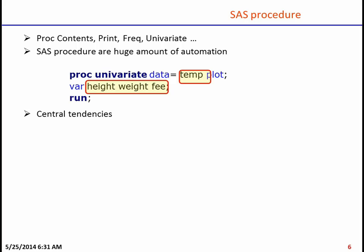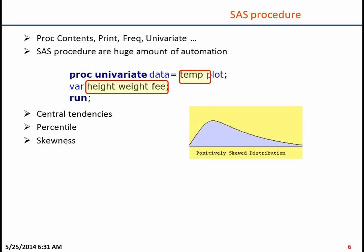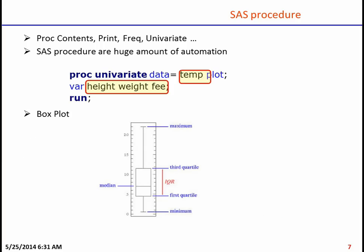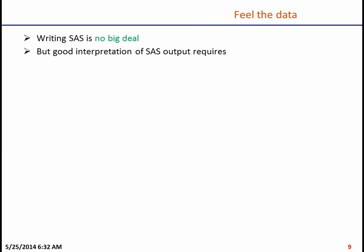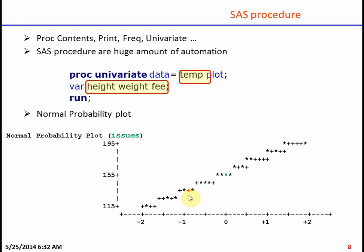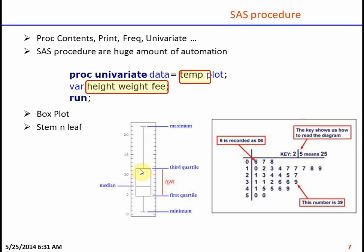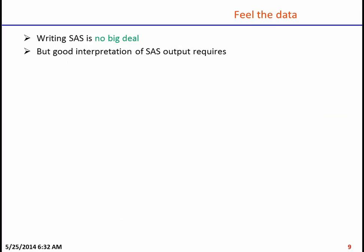Proc univariate produces central tendencies, percentiles, skewness, kurtosis, box plots, stem and leaf plots, and normal probability plots. Writing SAS code is not the hard part — what is important is interpreting the SAS output: why you're getting a star here, a plus sign there, what the central line in the box plot means, and how to use it to identify outliers. All of this requires good business sense, solid statistical knowledge, and serious effort.